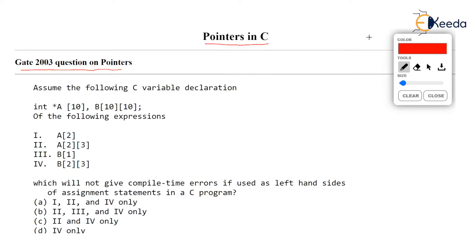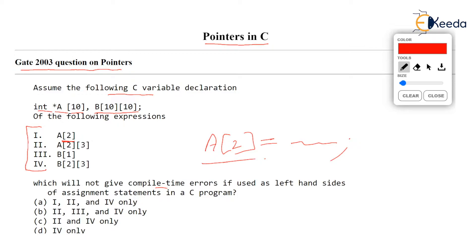We are given some declarations: first one is `int *a[10]` and second one is a double dimension array containing 10 rows and 10 columns, and we are given some notations. It is asked which of these notations, when used as the left hand side of an assignment statement in a C program, will give a compile time error.